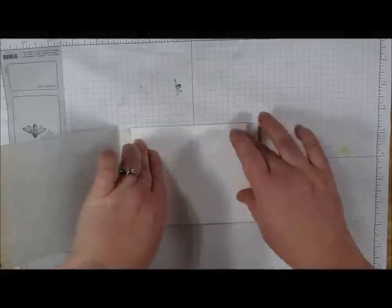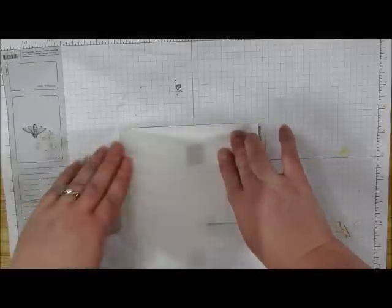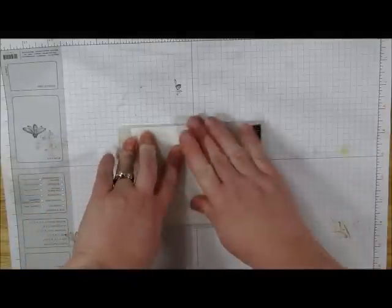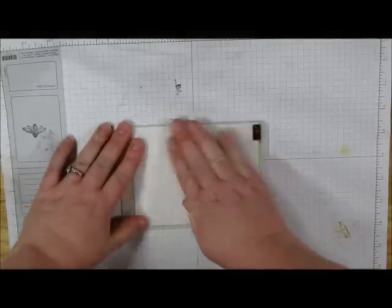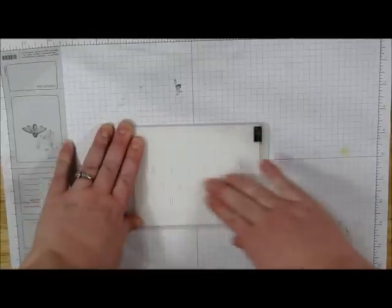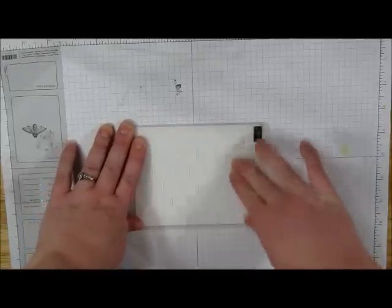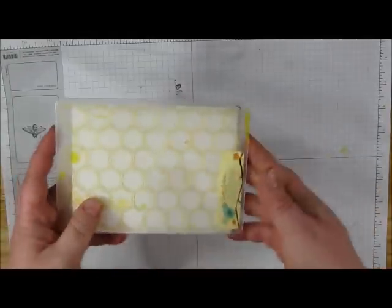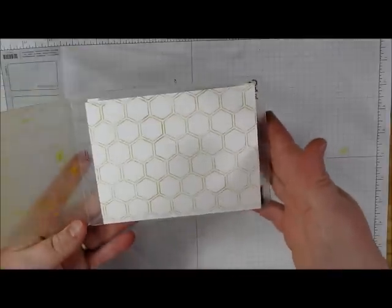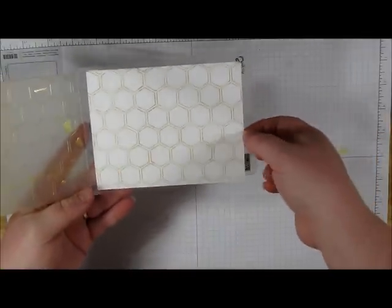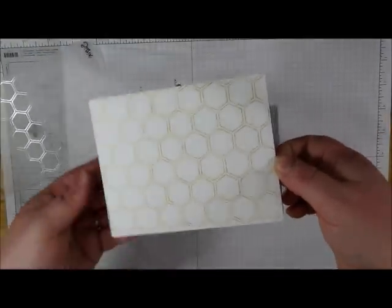Carefully place your card stock into your embossing folder on top of the paint. And we're just going to close it and apply even pressure. And then when you open it, you have basically stamped onto your card stock.